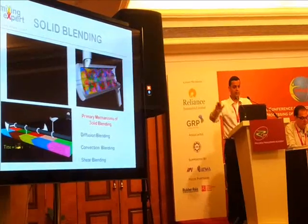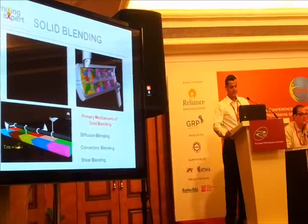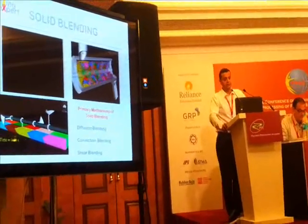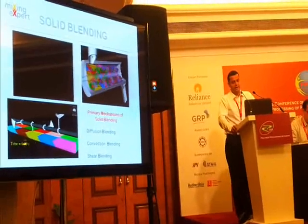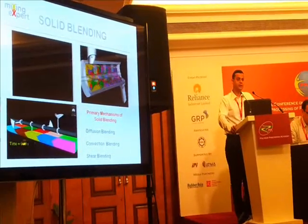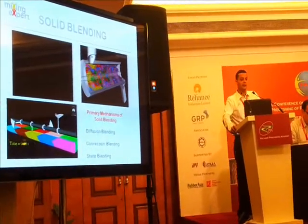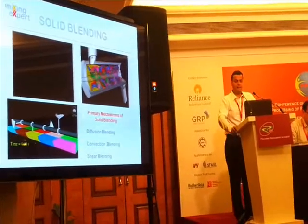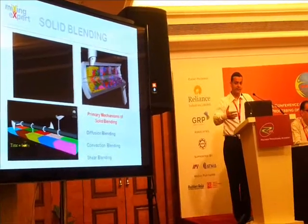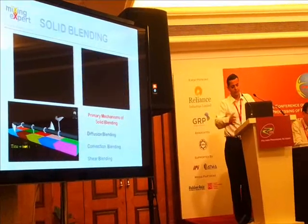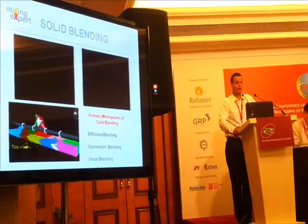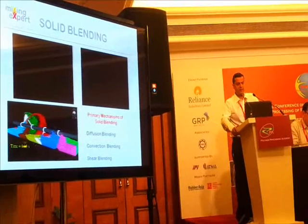What you see there is a panel blender in operation, which is a convective type of mixer. It creates bulk motion through the action of the mixing impellers, and over a period of time the effects of cohesiveness and densities all tend to get evened out, and by convective mixing you are able to get a homogeneous blend.